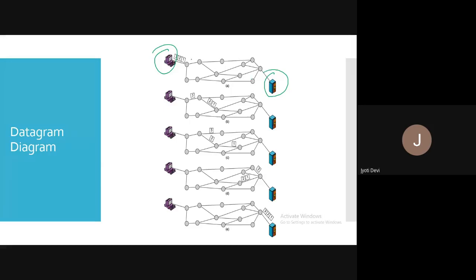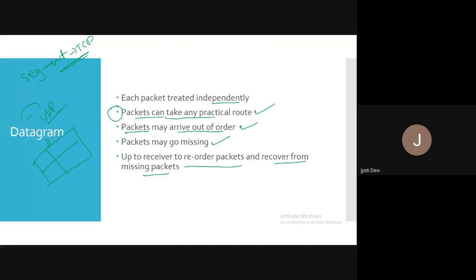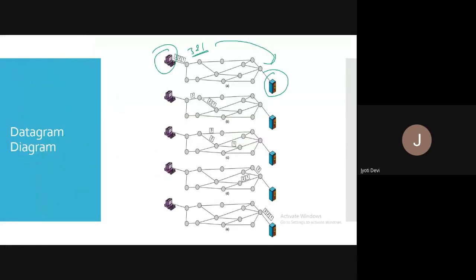There is a sender and there is a receiver. The sender wants to send packets 3, 2, and 1 to the receiver. In a datagram, packets can take any practical route — please keep in mind — and packets may arrive out of order. So packets 2 and 1 take this route, and packet 3 is now on the way. After a node, packet 3 takes one route and packet 2 takes another route.